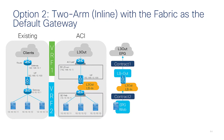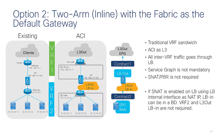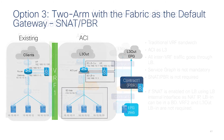Option two is where the fabric is the default gateway. In this case, you would use two different VRFs with a layer three out connecting to the load balancer. The load balancer needs no source NAT and no policy-based routing. The VIP belongs to the same BD as the outside bridge domain.